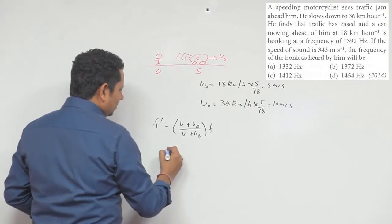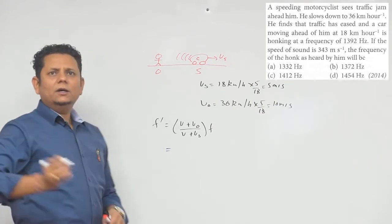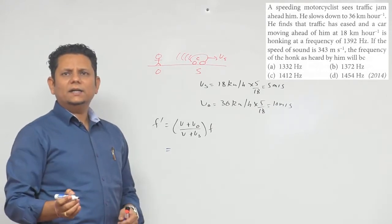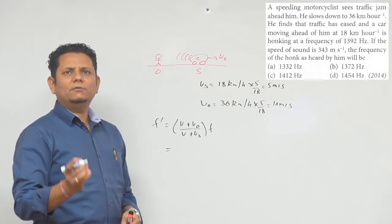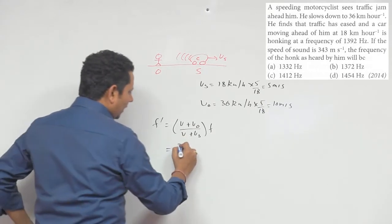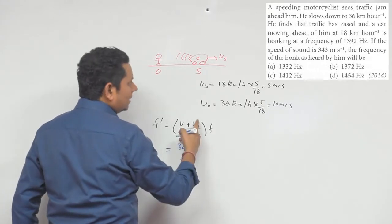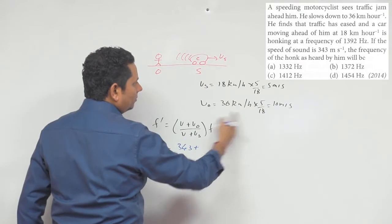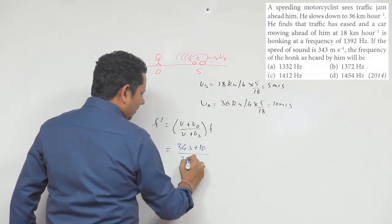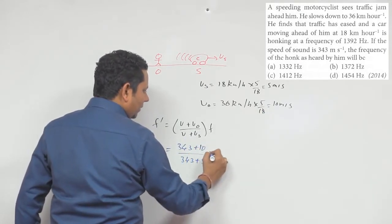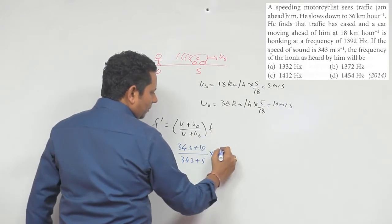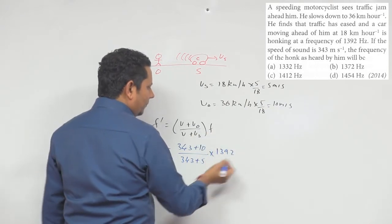The speed of sound is given as 343. So this becomes: 343 plus v₀, which is 343 plus 10, equals 353. In the denominator, 343 plus 5 equals 348. Multiplied by the frequency 1392. Now when we calculate, this is 353 divided by 348 multiplied by 1392.